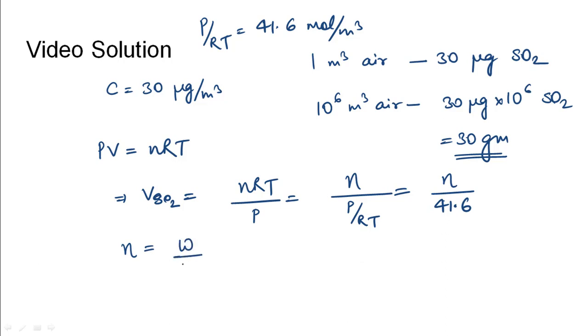Now we need to find the number of moles. Number of moles would be the weight divided by the molecular weight of sulfur dioxide. Here the required weight is 30 grams in 1 million meter cube divided by molecular weight 64, which equals 0.46875 moles.